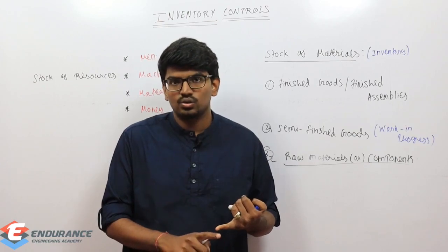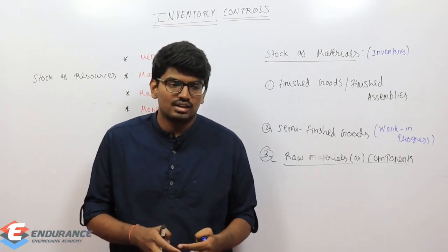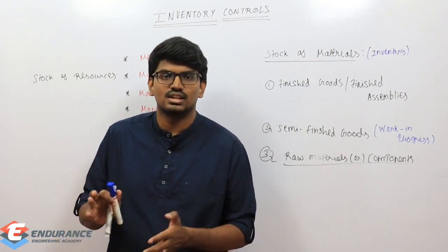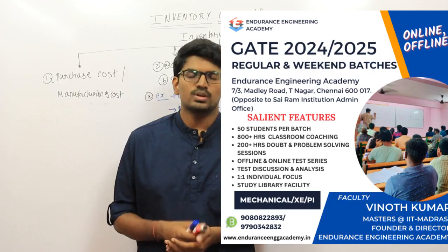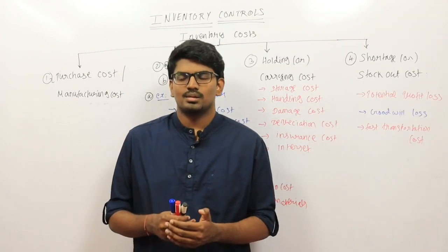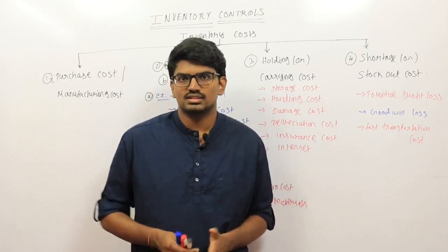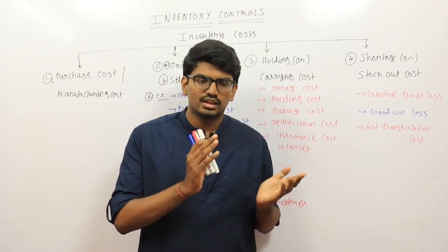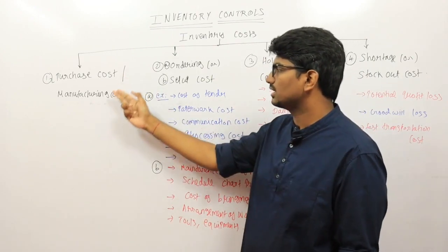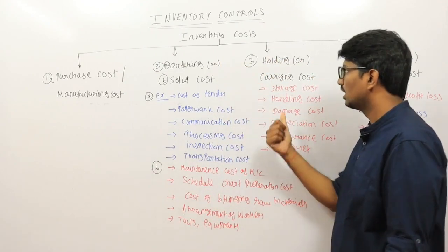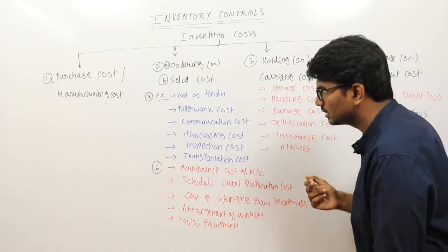We cannot store more than optimal — we have to optimize. What is generally involved in inventory control? What are all the different types of cost associated with inventory? Basically there are four costs, though the names will vary depending on perspective. The first is purchase cost and manufacturing cost; the second is ordering cost and setup cost; the third is holding or carrying cost; and the last one is shortage or stockout cost.